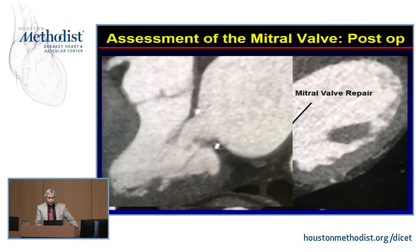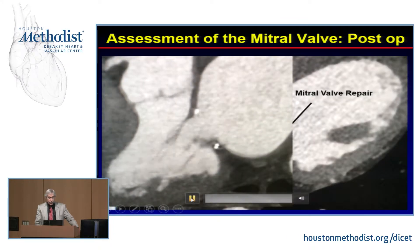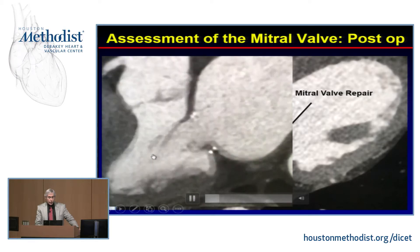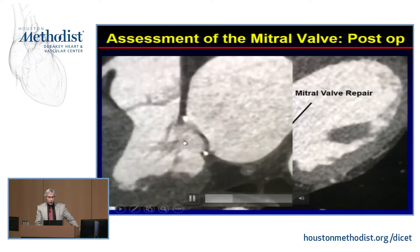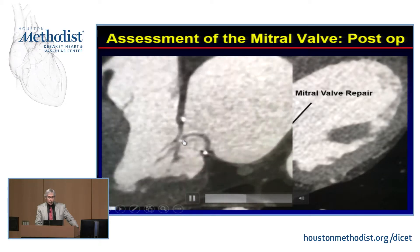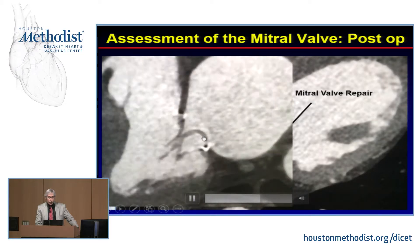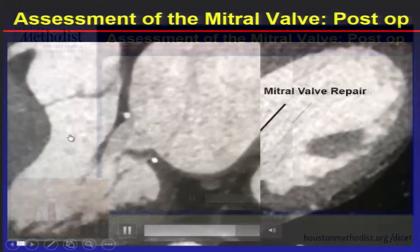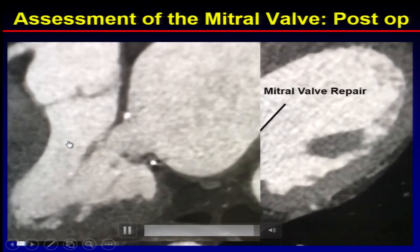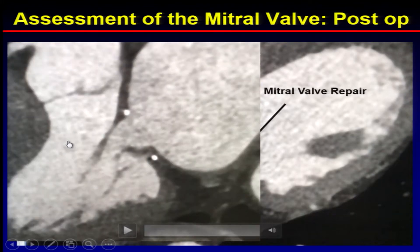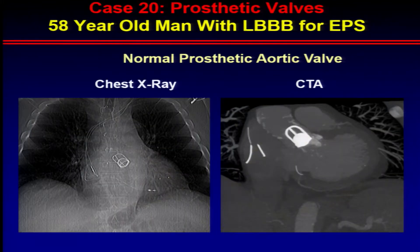In a 3-chamber view, you can see very nice coaptation of the leaflets, although there is still prolapse of the posterior leaflets. So you can assess patients after having valvular surgery.